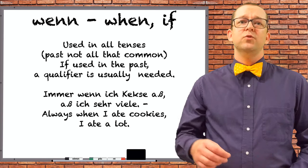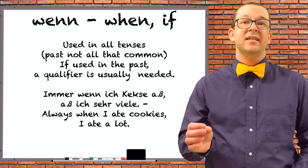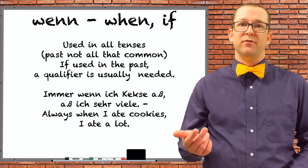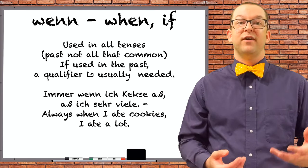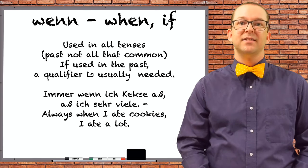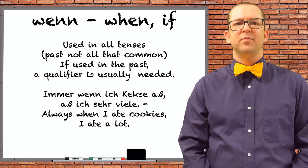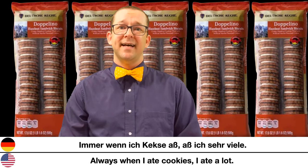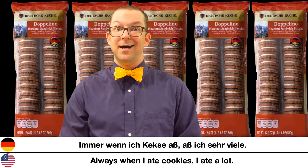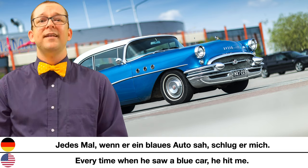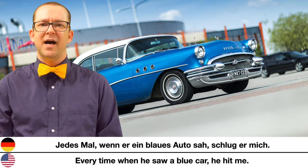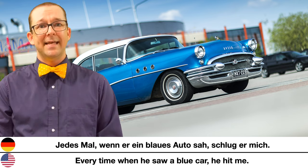While als can only be used in the past, the conjunction wenn can be used with all tenses. If you want to use it with the past, you'll probably need a qualifier before wenn to indicate how often it occurred. For example: 'Immer wenn ich Kekse aß, aß ich sehr viele.' — Always when I ate cookies, I ate a lot. 'Jedes Mal, wenn er ein blaues Auto sah, schlug er mich.' — Every time when he saw a blue car, he hit me.